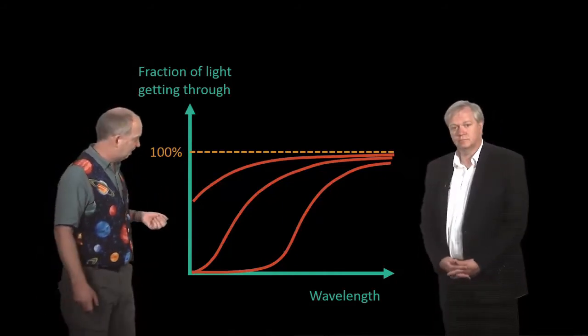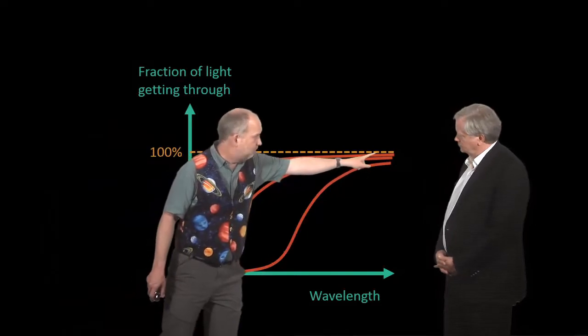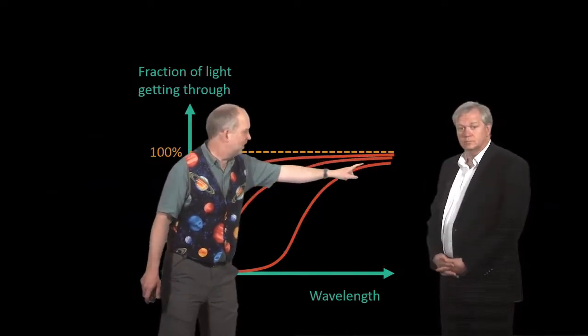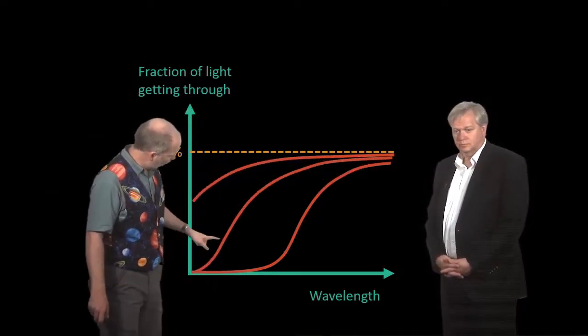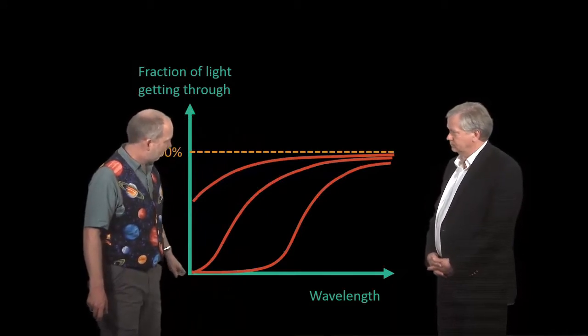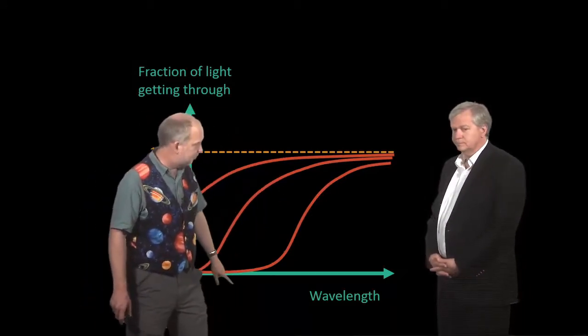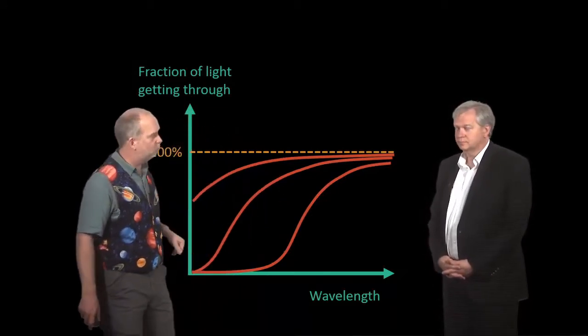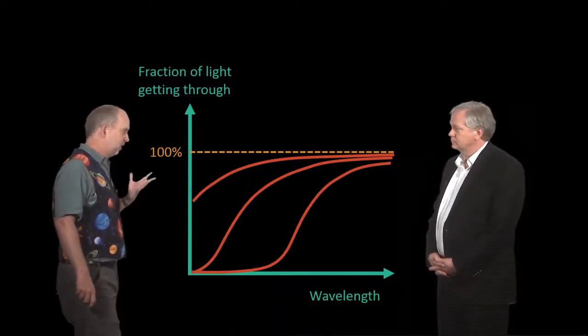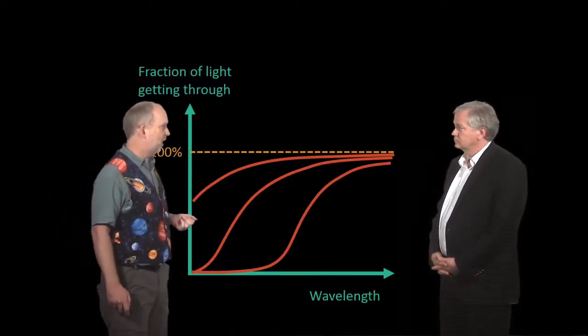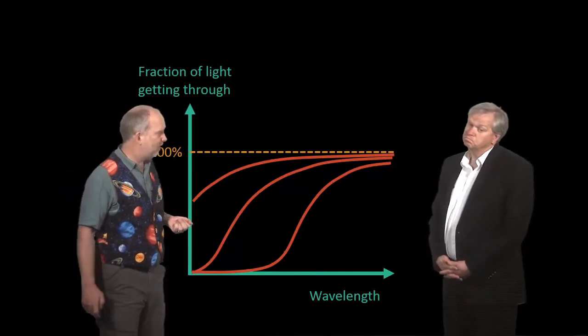Now, if you ramp up the amount of dust and have more, it might go something like the second curve. In the infrared, you're now losing 2%. But by the time you're down here in the green or the blue, you're losing nearly all the light. And if you add even more dust, it gets worse still, but it gets worse primarily in the blue. So this gives us a way to find out how bad the dust is and correct for it.